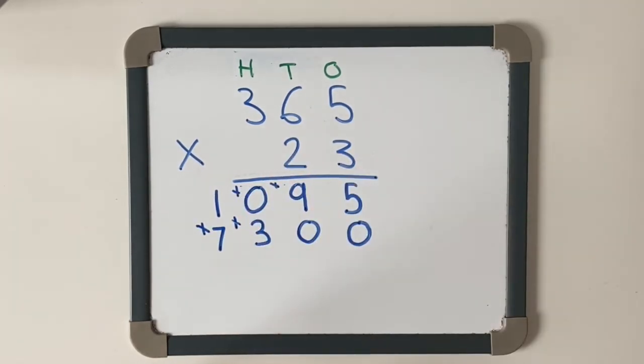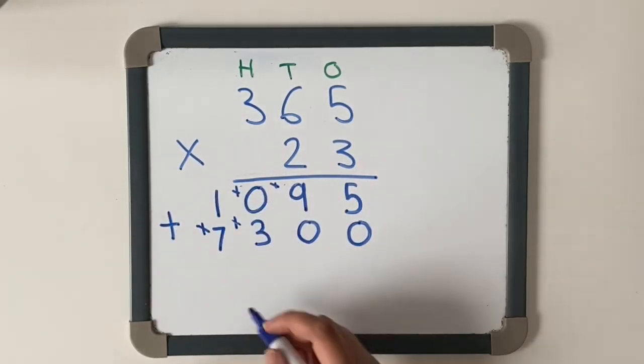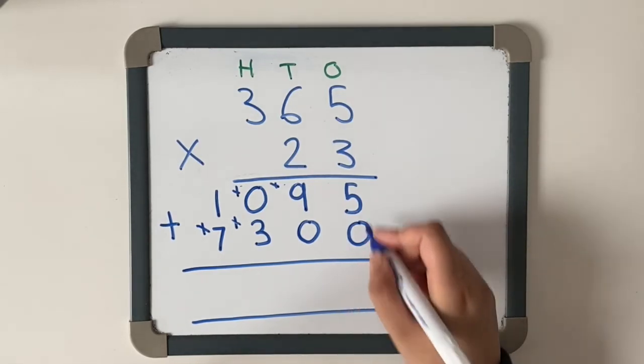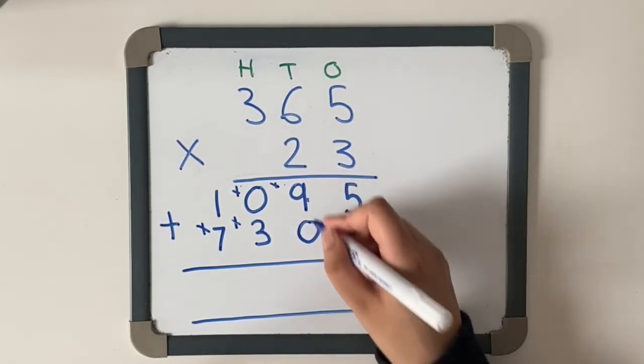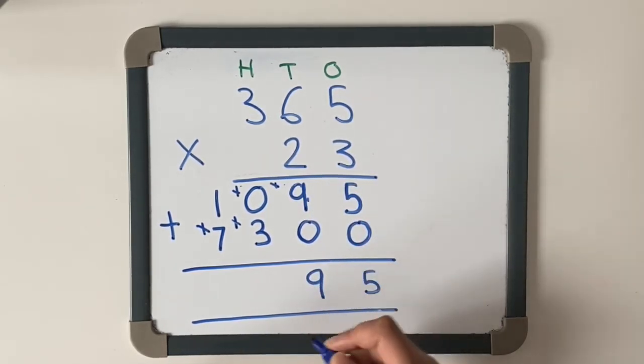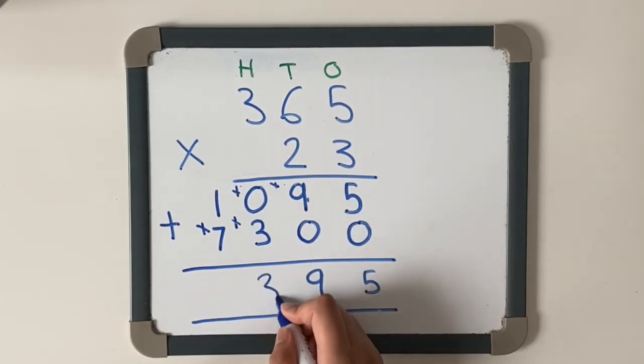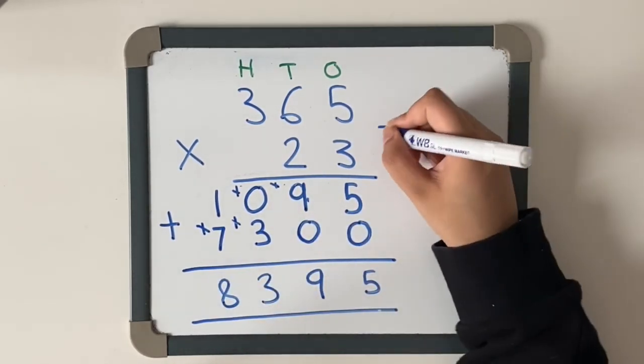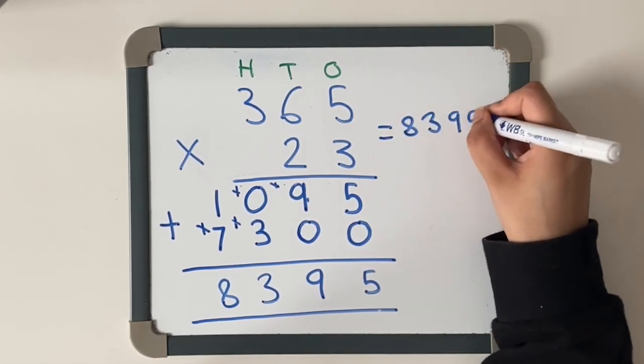And now this is the easy part because all we're doing is adding these two numbers together. Five add zero is five, nine add zero is nine, zero add three is three, seven add one is eight. So the answer is 8,395.